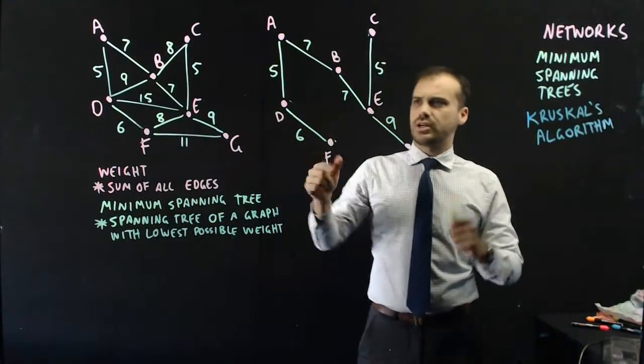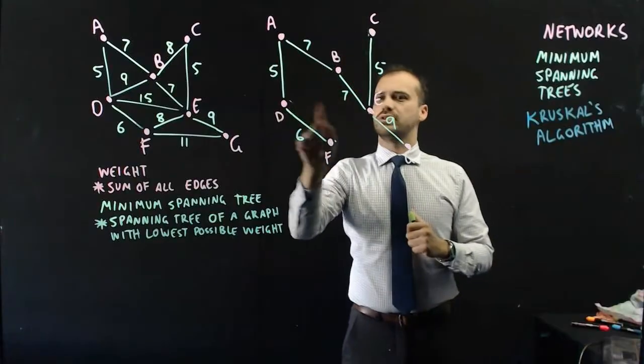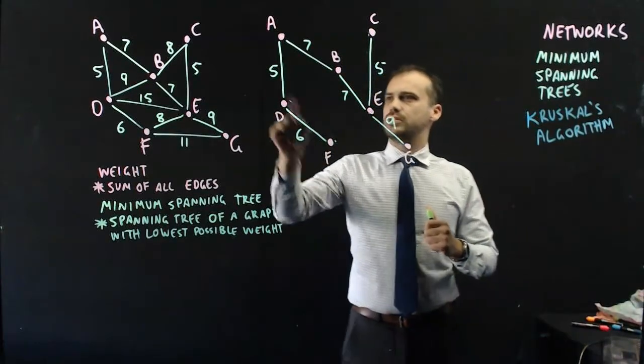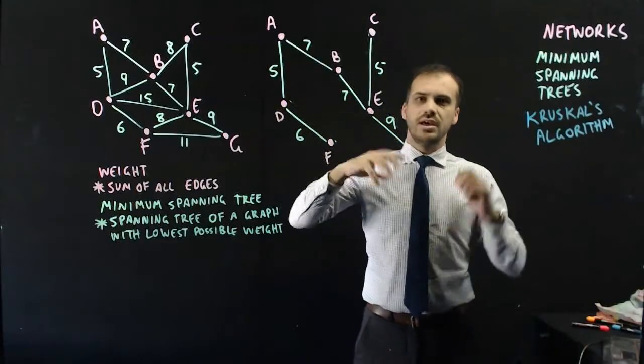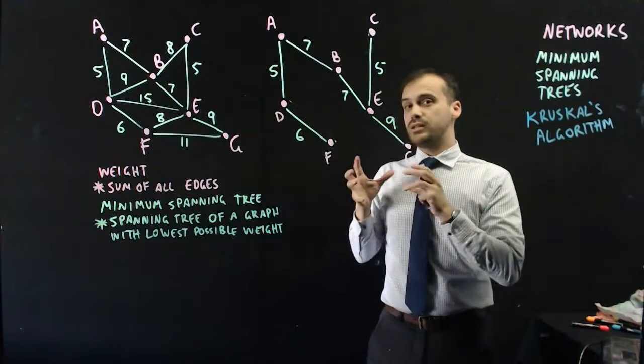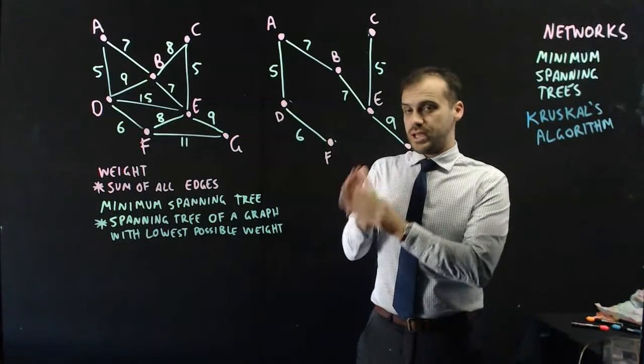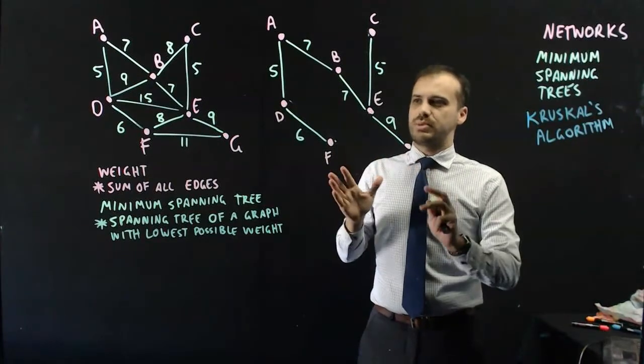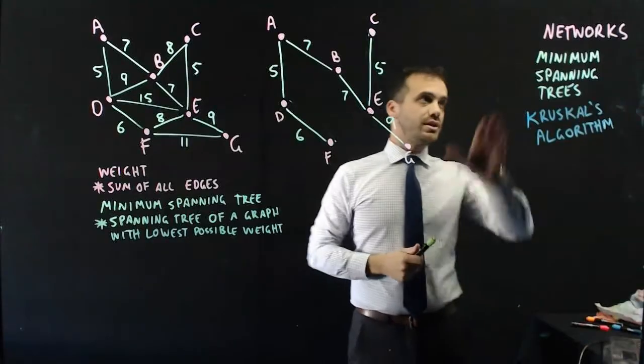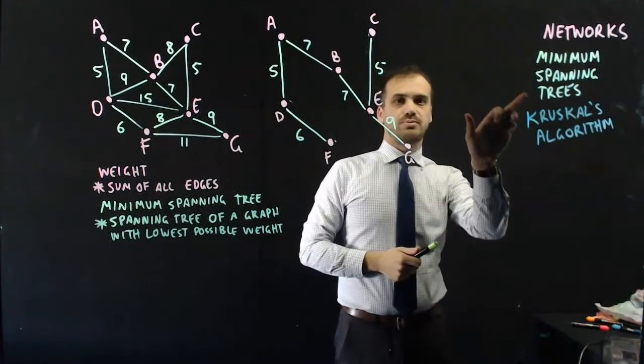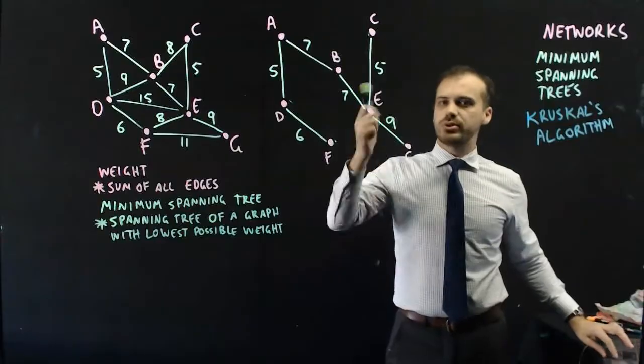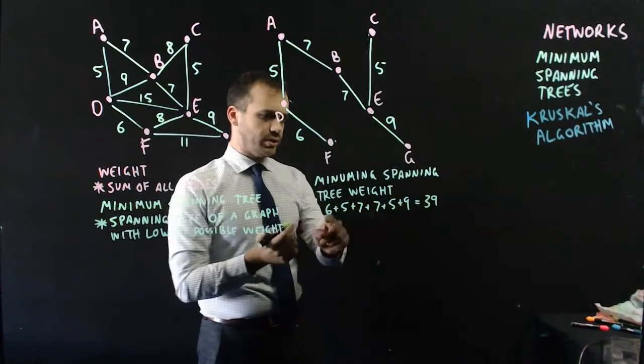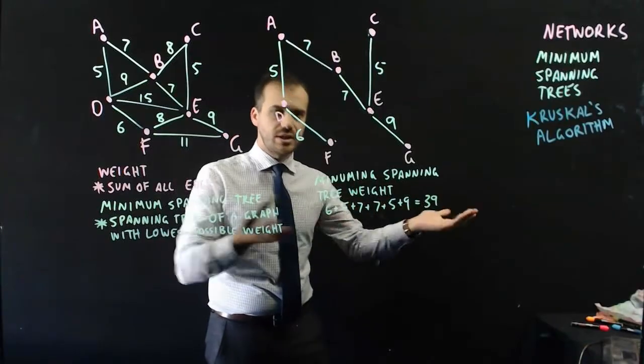How many vertices did I have? 1, 2, 3, 4, 5, 6, 7. How many edges do I now have? 1, 2, 3, 4, 5, 6. Everything's connected. I have one less edge than vertices. So, this is a spanning tree. It's a great spanning tree. Not only is it a great spanning tree, it is a minimum spanning tree. I wonder what the total weight of this spanning tree is. Okay, I get a total weight of 6 plus 5 plus 7 plus 7 plus 5 plus 9, 39.